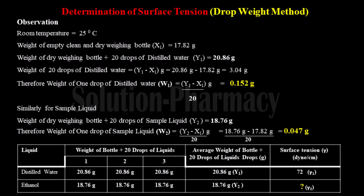To calculate the weight of 20 drops of distilled water only, subtract the weight of the empty bottle from the total weight. So y1 minus x1 equals 20.86 minus 17.82 grams, giving 3.04 grams — the weight of 20 drops of distilled water. To calculate the weight of one drop, divide by 20: 3.04 grams divided by 20 equals 0.152 grams. This is the weight of one drop of distilled water, denoted by w1.